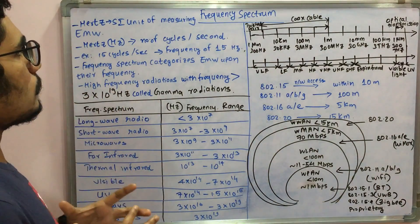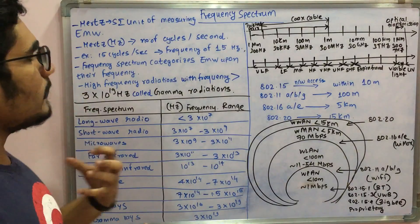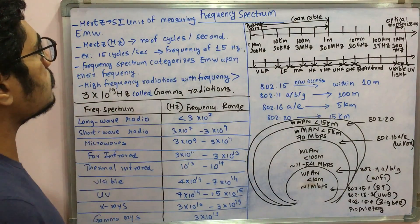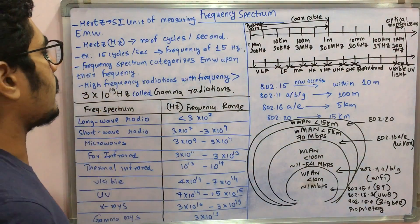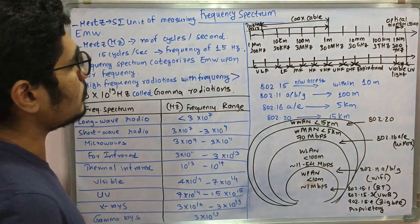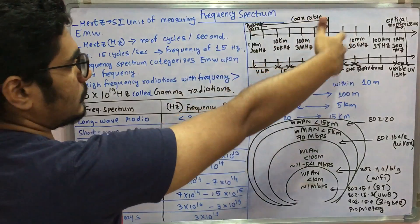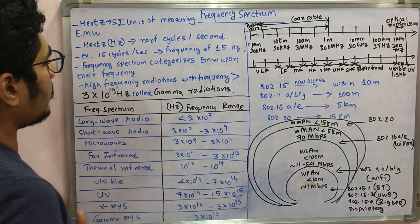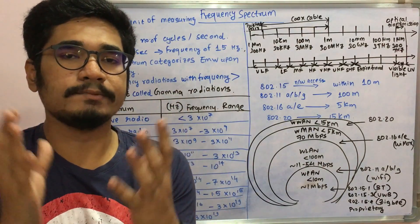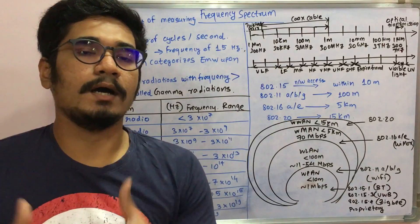Let's start with some basics. Hertz was the name of a scientist, and hertz is the SI unit for measuring the frequency of electromagnetic waves. It represents the number of cycles per second. For example, if you have 15 cycles per second, the frequency is 15 hertz. The frequency spectrum categorizes electromagnetic waves depending upon their frequency, making it easier to understand how they are distributed.